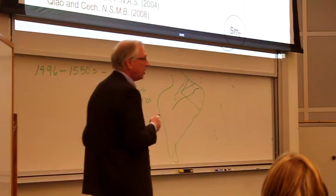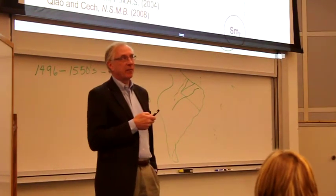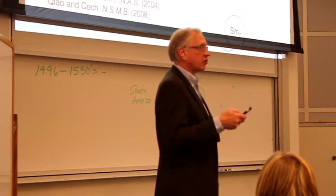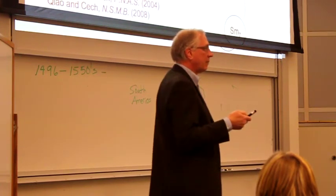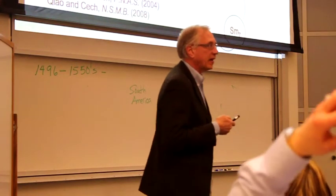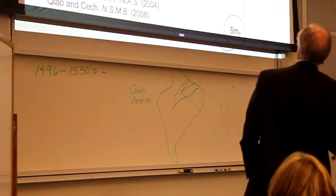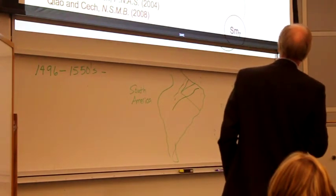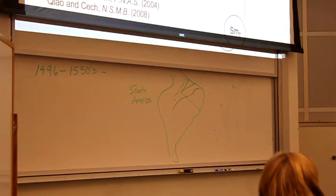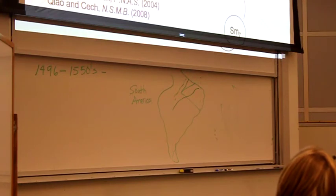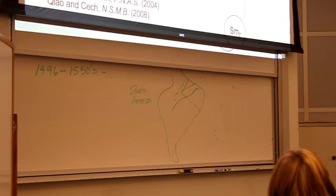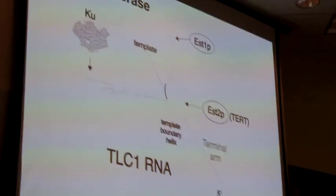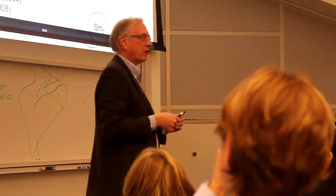For many of these experiments we use the yeast system, the budding yeast Saccharomyces cerevisiae, because it allows us to do both biochemistry and genetics on the same system and to test in vivo some of the ideas that come from our in vitro experiments. The use of the yeast system was inhibited for a long time because we didn't know the structure of the yeast telomerase RNA. This RNA molecule folds up in a really unusual way for RNA - it has these three long arms coming out of this central region.